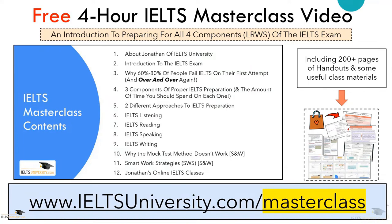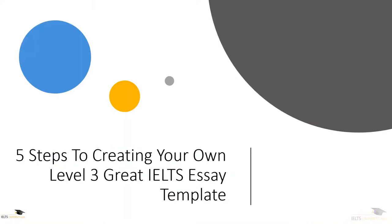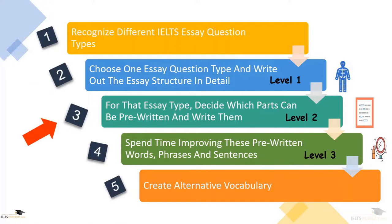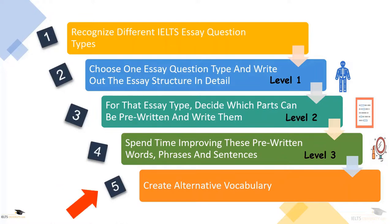Back to the five steps to creating a Level 3 IELTS essay template. Step one: recognize different IELTS essay question types. Step two: choose one essay question type and write out the essay structure in detail — that's a Level 1 essay template. Step three: for the essay type, decide which parts can be pre-written and write them — that's a Level 2 essay template. Step four: spend time improving these pre-written words, phrases, and sentences — that's Level 3. And step five: create alternative vocabulary.